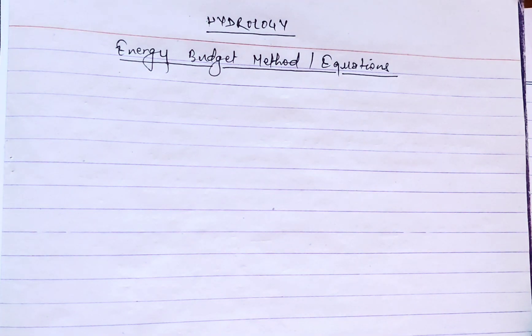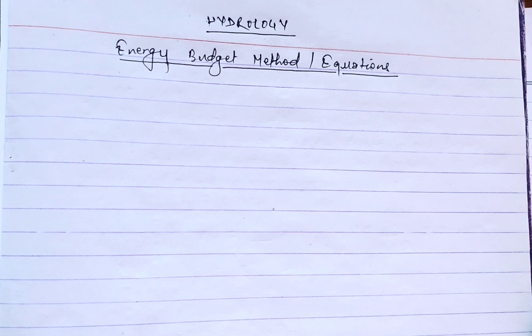Hello everyone, welcome to our channel. Today in this video we are going to find out the energy budget method or energy budget equation in hydrology. The energy balance equation refers to the accounting of energy exchange within a hydrological system. The equation is used to understand and quantify the various processes that involve the transfer and transformation of energy in the water cycle.